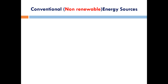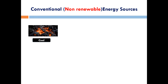Conventional or non-renewable energy sources are those which humans have been using for long years, hence we call them conventional sources. Coal was formed long ago by degradation of plants underground under high pressure and temperature without the presence of air. It is a solid, brown or brownish-black colored fuel. After wood, coal was the main source of energy.